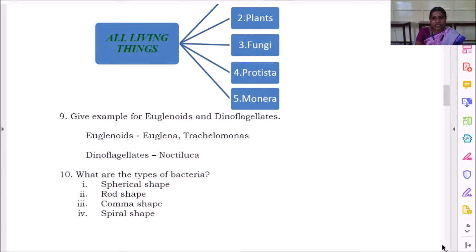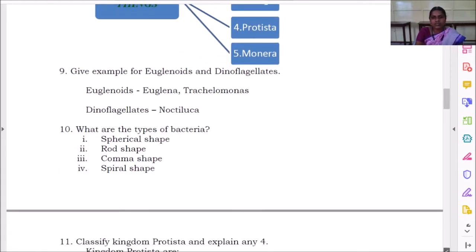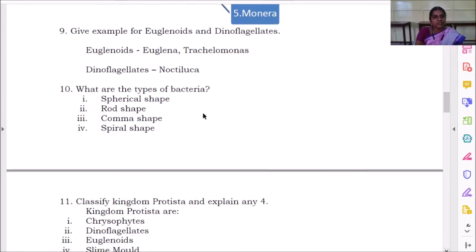What are the types of bacteria we had studied? Based on the shape of bacteria, we have spherical type, rod shape, comma shape, and spiral shape. What is the next question here?